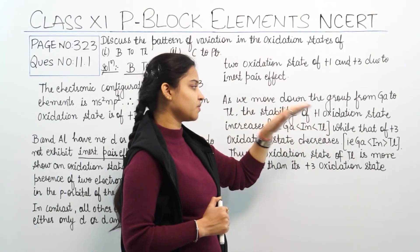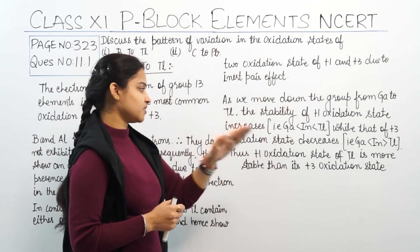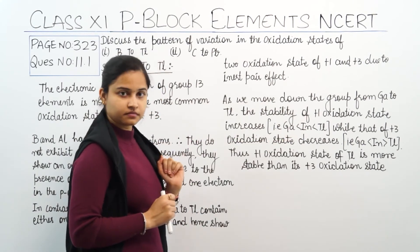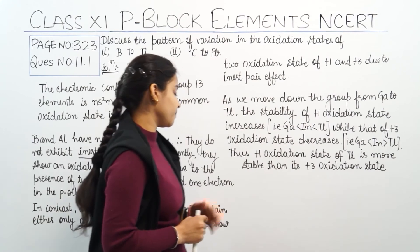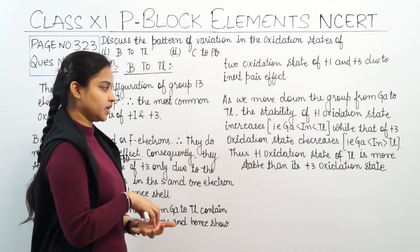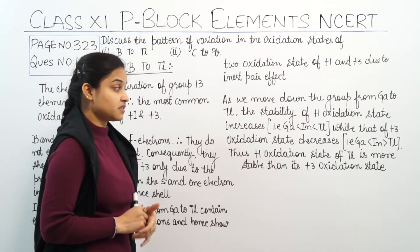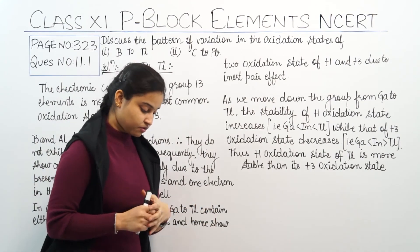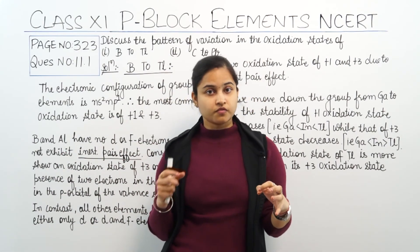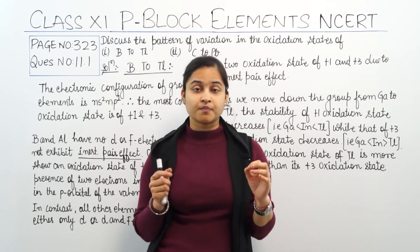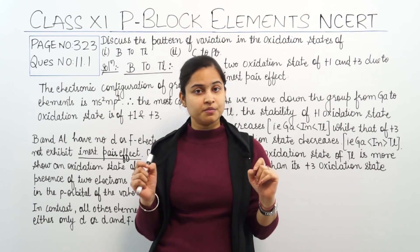Gallium, indium, and thallium — thallium's +1 oxidation state will be the most stable, while the stability of the +3 oxidation state decreases in this order. Thus, in a nutshell, the +1 oxidation state of thallium is more stable than its +3 oxidation state. This was the variation of oxidation states in the boron family from boron to thallium. Now I will be discussing the variation of oxidation states in the carbon family from carbon to lead.